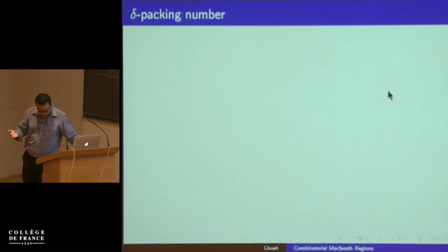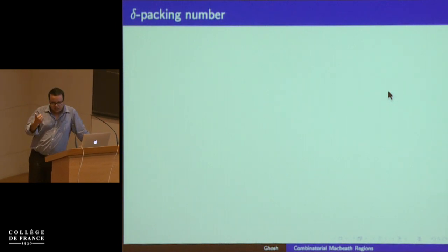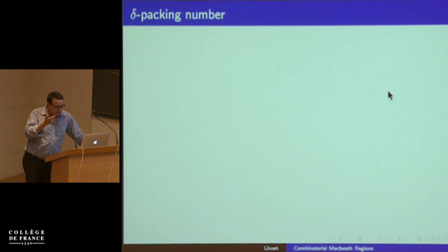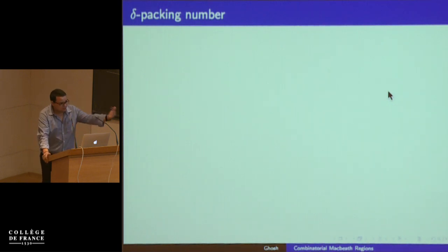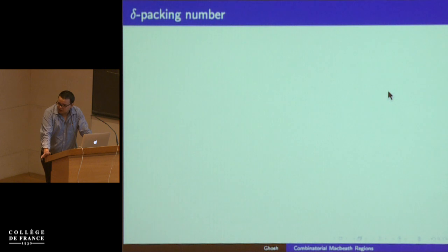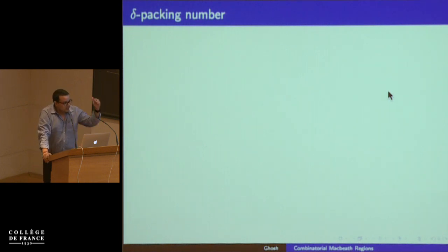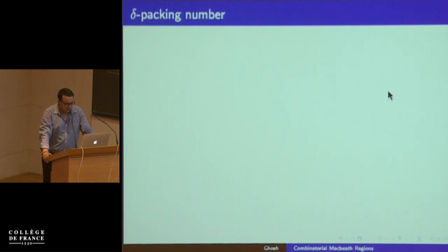The M-net bound result is possible because of two ingredients. One is connected to the proof of the Guth-Katz unit distance conjecture and recent results that followed. One result that Kunal, Esther Ezra, and I proved is a packing number bound for shallow cell complexity — the shallow packing lemma — and Nabil later gave a proof-from-the-book of the same result: we wrote a 20-page paper and Nabil wrote a half-page proof. This shallow packing lemma and polynomial partitioning both play important roles in proving the M-net bound.